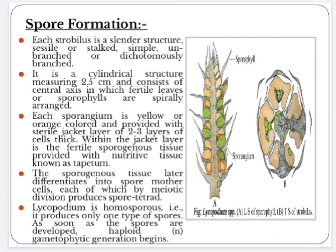Within the jacket layer is the fertile sporangium tissue, provided with nutritive tissue known as tapetum. The sporangium tissue later differentiates into spore mother cells, each of which by meiotic division produces a spore tetrad. Lycopodium is homosporous, meaning it produces only one type of spore. As soon as the spores are developed, the haploid gametophytic generation starts.